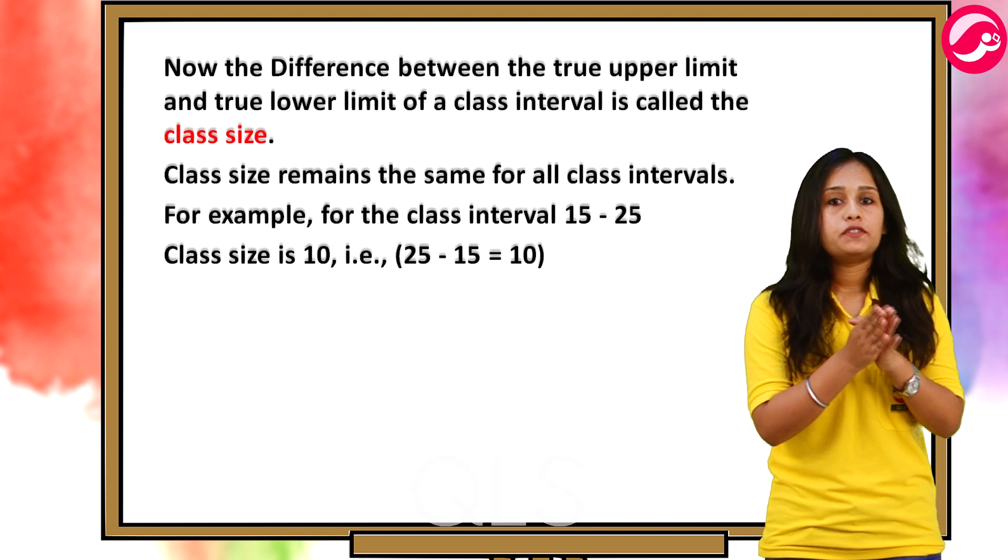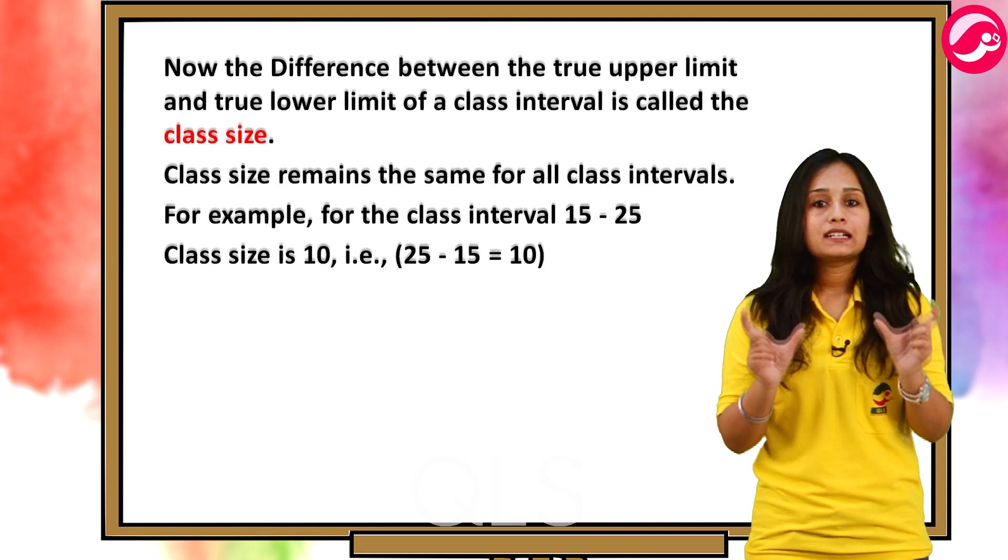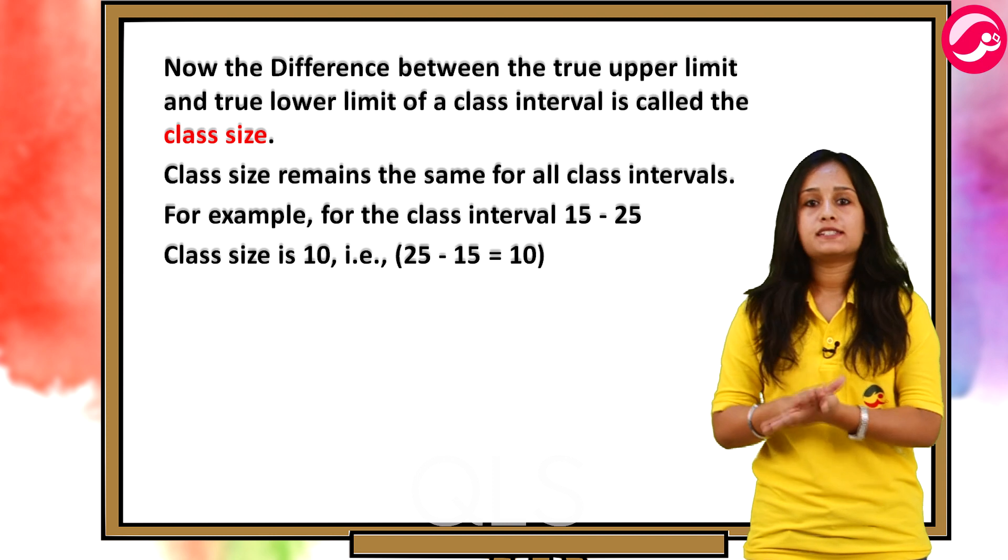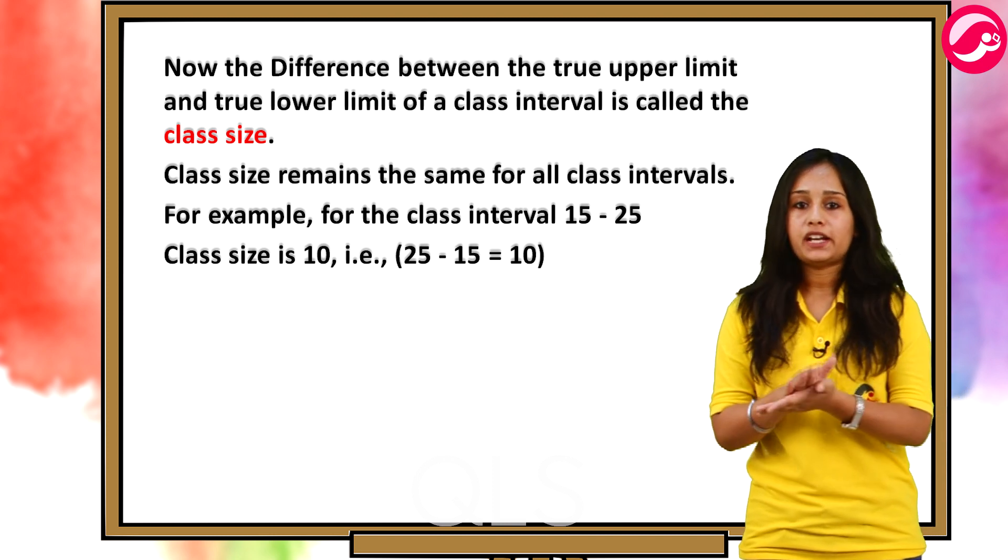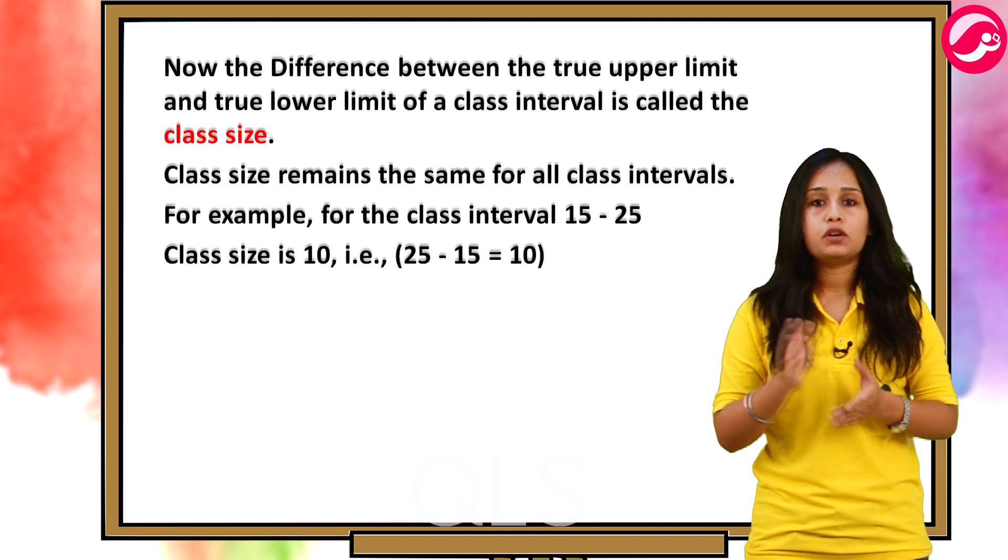Now, the difference between the true upper limit and the true lower limit of a class interval is called the class size. Class size remains the same for all class intervals. For example, for the class interval 15 to 25, class size is 10 that is 25 minus 15 which is equal to 10.